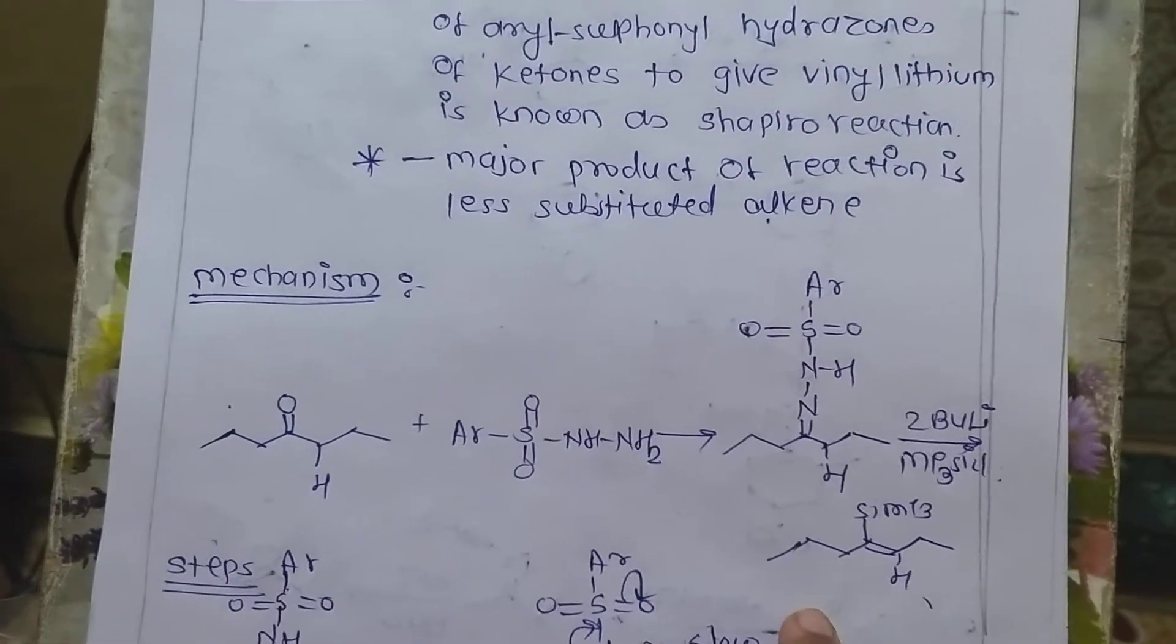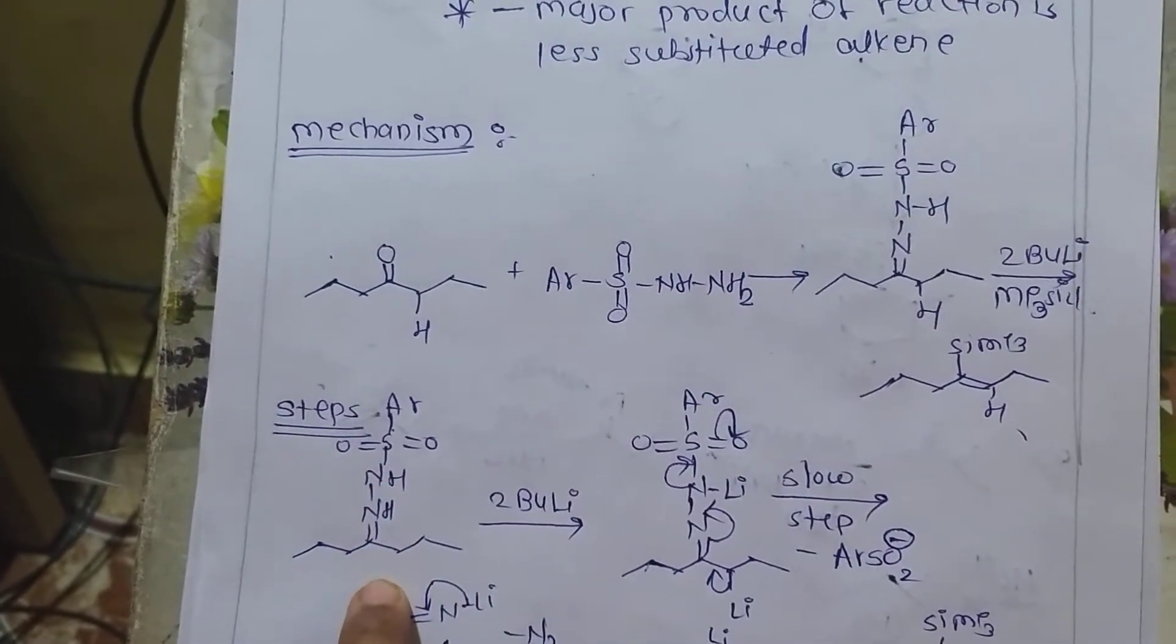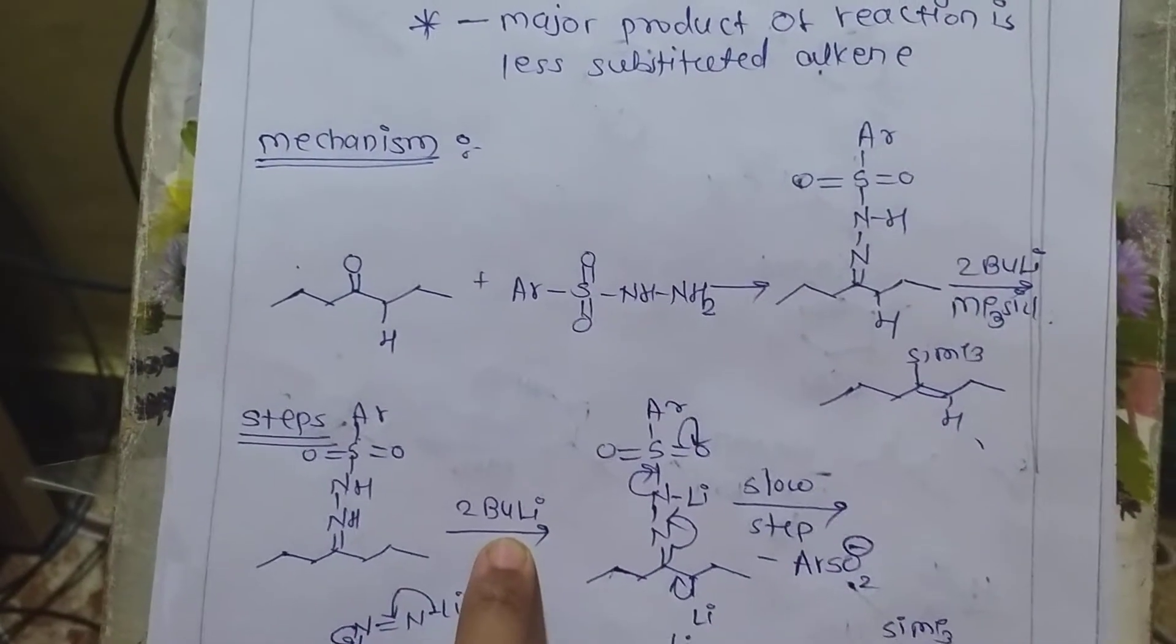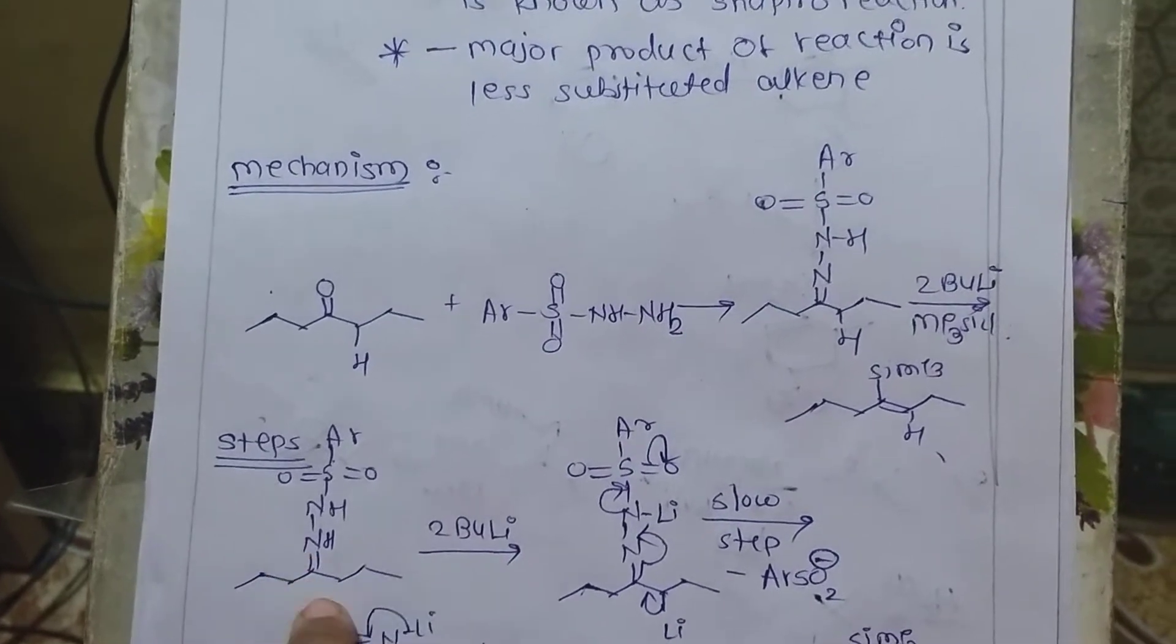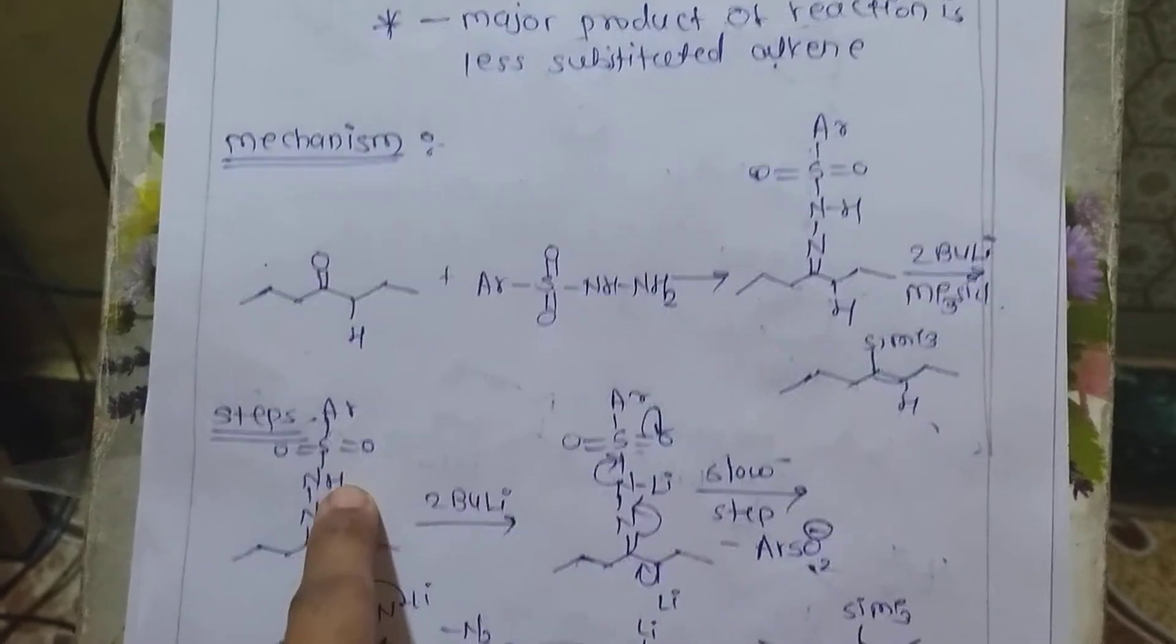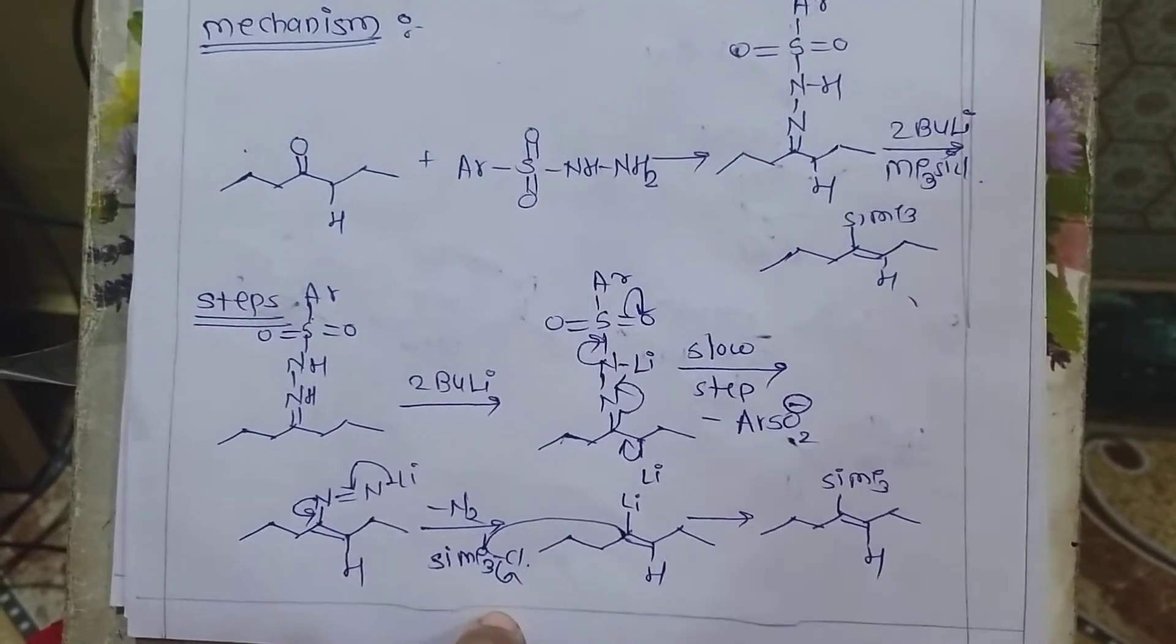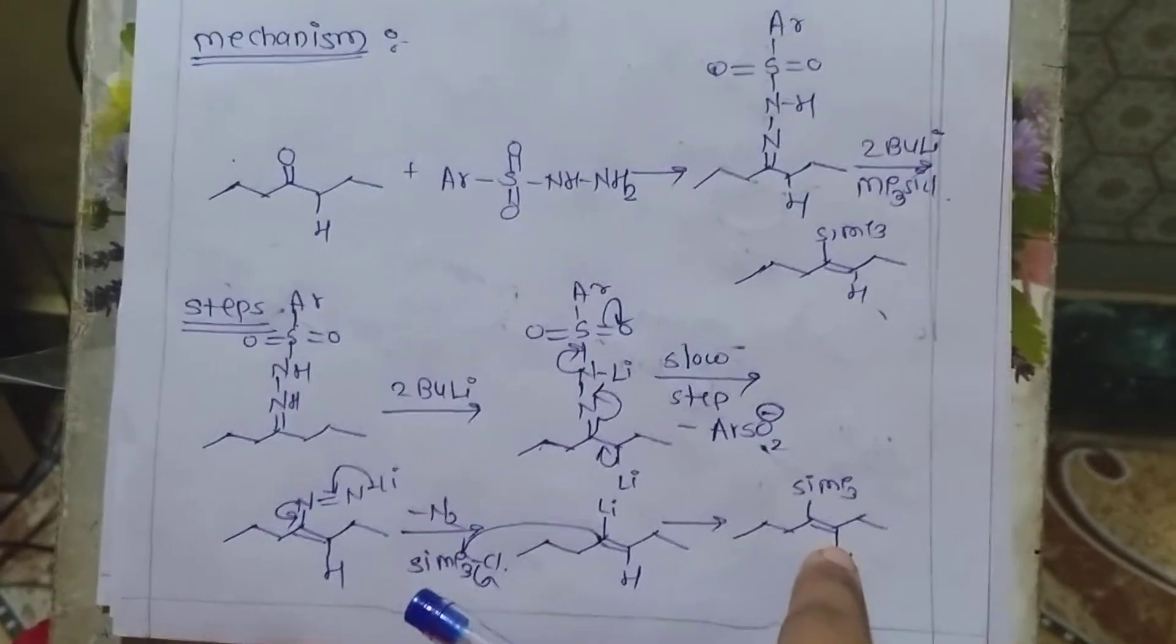If we talk about the steps involved in the mechanism, ketone reacts with aryl sulfonyl hydrazone like this. After that, two equivalents of butyllithium - first butyllithium will abstract proton from this position and second butyllithium abstracts proton from this position, leading to formation of less substituted alkene. It removes nitrogen atom, trimethylsilyl chloride gets attached and forms less substituted alkene.